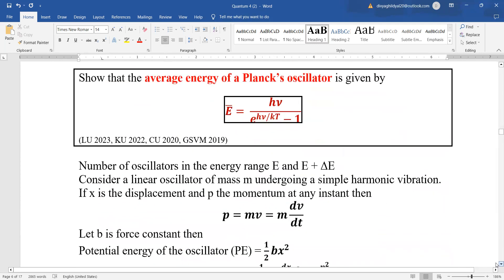Now, this question is a very favorite question of all exams which have this syllabus in their heading that show that average energy of a Planck's oscillator is given by E equal to hμ upon e to the power of hμ divided by kT minus 1. And also, numericals are asked on this formula. So, let us begin.